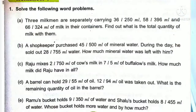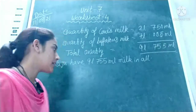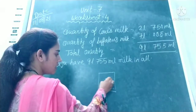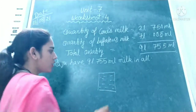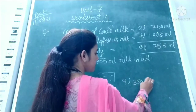Let's read part E first. Ramu's bucket holds 9 litres 350 millilitres of water, and Shalu's bucket holds 8 litres 455 millilitres of water. Whose bucket holds more water, and by how much? It is given that Ramu's bucket capacity is 9 litres 350 millilitres.